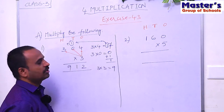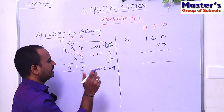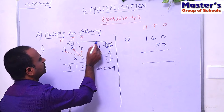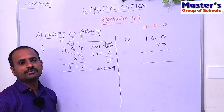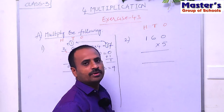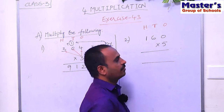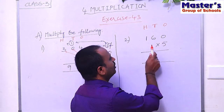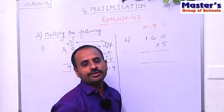In this way, if the product is a two-digit number, write only the second digit under that place and carry the first digit to the next place, then add the carried number to the product. Now see the next problem. The given number is 116.